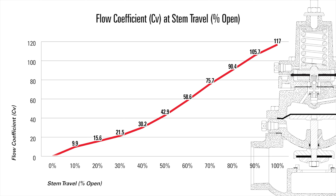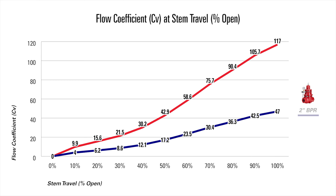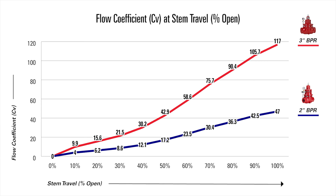Here we have a CV chart showing flow curves for two different valves: a 2-inch and a 3-inch Kimray back pressure regulator. As the stem opens, the CV increases.